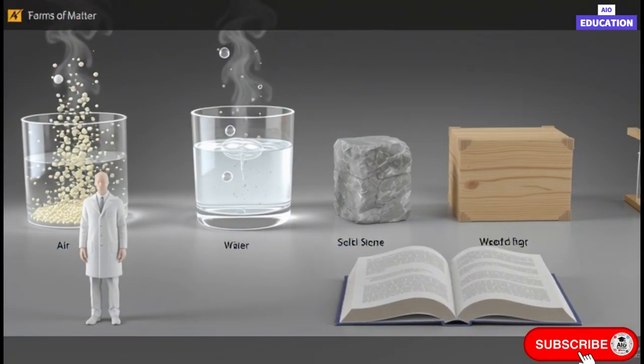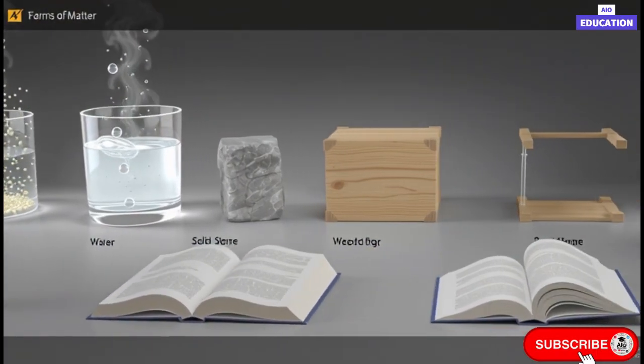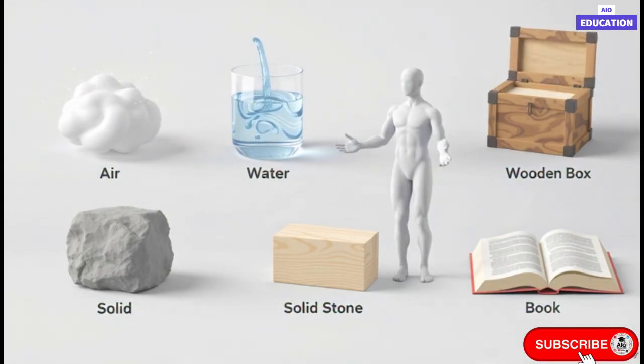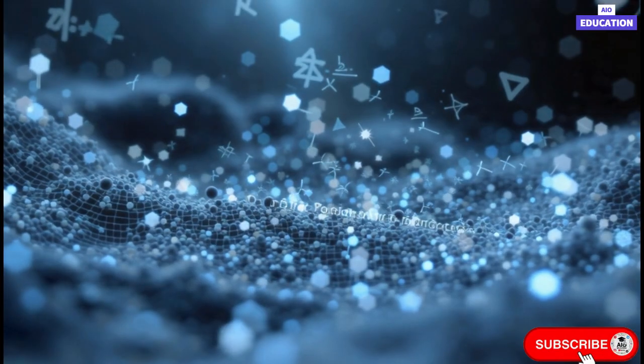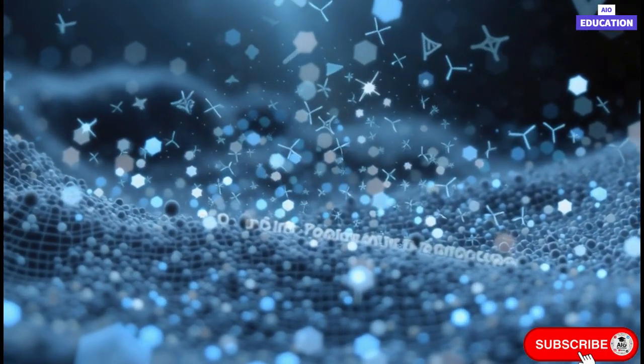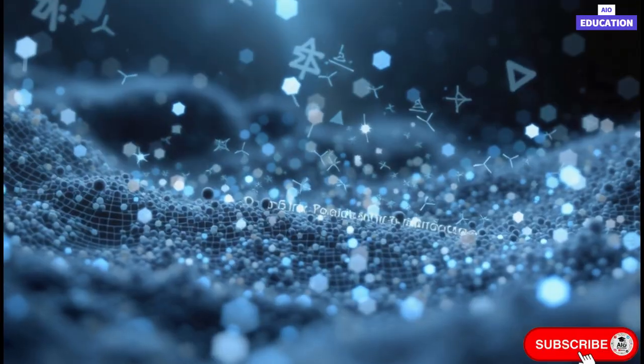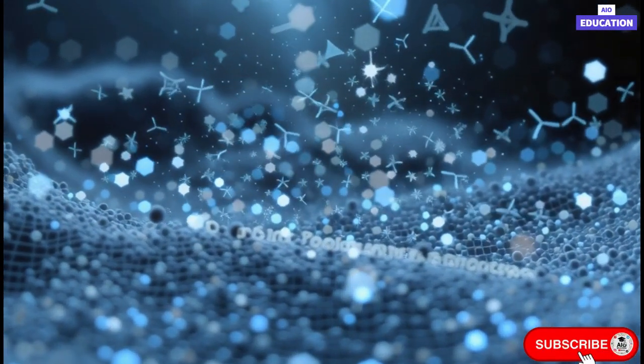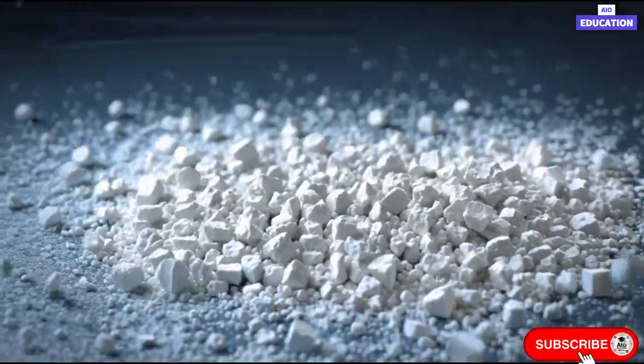Let's take a simple example. If we take a piece of chalk and keep breaking it into smaller and smaller pieces, it will finally become a fine chalk powder. But even then, its properties remain the same. It is still chalk. This means only the size of the particles changed, not the substance itself. Such changes are called physical changes, because only the physical form changes, not the chemical nature.